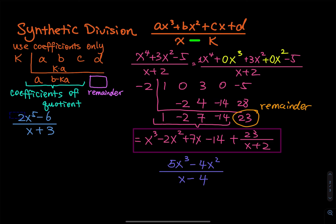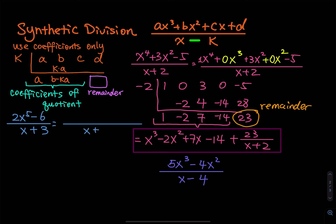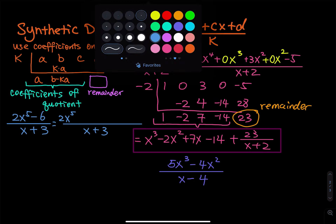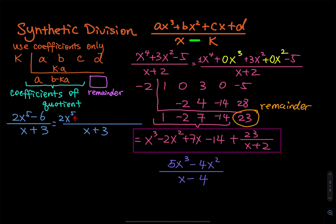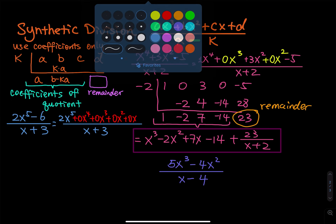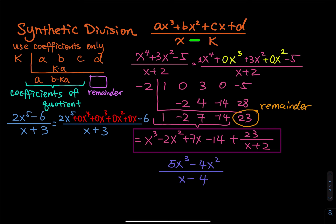Moving on to the next problem. I'm going to move this a little to the left so I can write the missing degrees. We have x to the third in the divisor and then we have two x to the fifth in the dividend. So the fourth, third, second, and first degrees are all missing. We have to add them back: zero x to the fourth plus zero x to the third plus zero x squared plus zero x. And then finally, minus six. Prepare the synthetic division — this is x minus k, we have a plus three, so this is going to be negative three. Draw a big L.